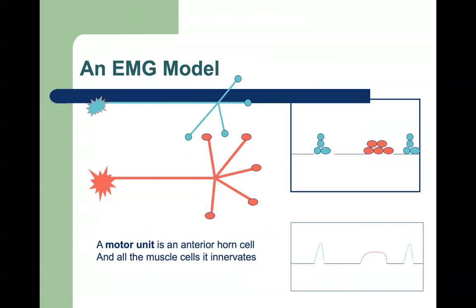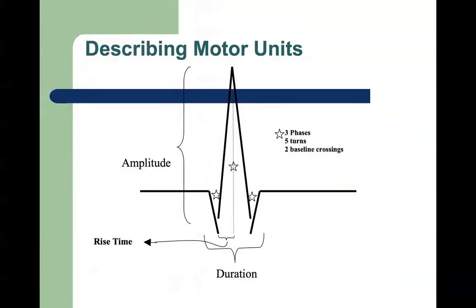You describe the shape of a motor unit by how tall it is, how wide it is, and how many times it squiggles up and down — we call those phases, turns, or baseline crossings. A polyphasic motor unit isn't just up and down; it's going up and down repeatedly. When your needle is very close to a motor unit there's a very steep rise time; if the needle is further away there's more gradual dampening of the signal, which is why you have to put a needle into the muscle rather than using a surface electrode.